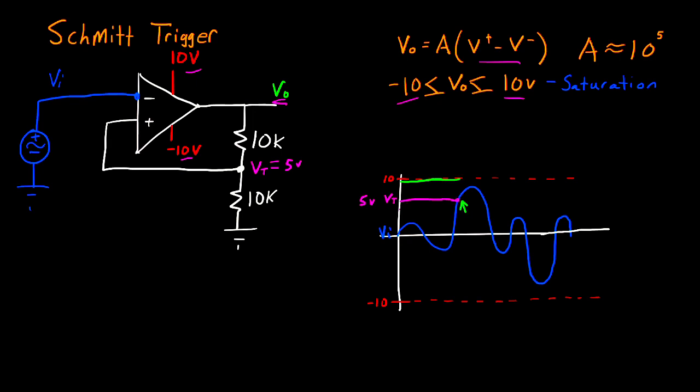Right here, Vi becomes greater than Vt. If Vi is greater than Vt, that would mean that the negative value becomes larger than the positive value within these parentheses, meaning that this term is going to become a very large negative number. And that saturates our op amp to the negative rail. So now the output voltage is going to drop all the way to negative 10.